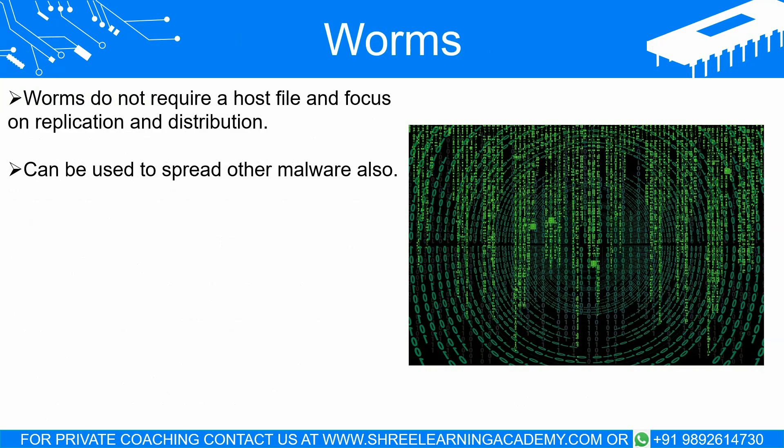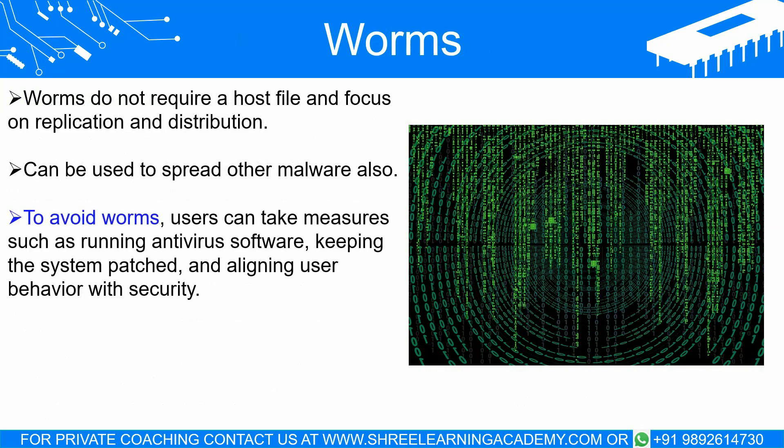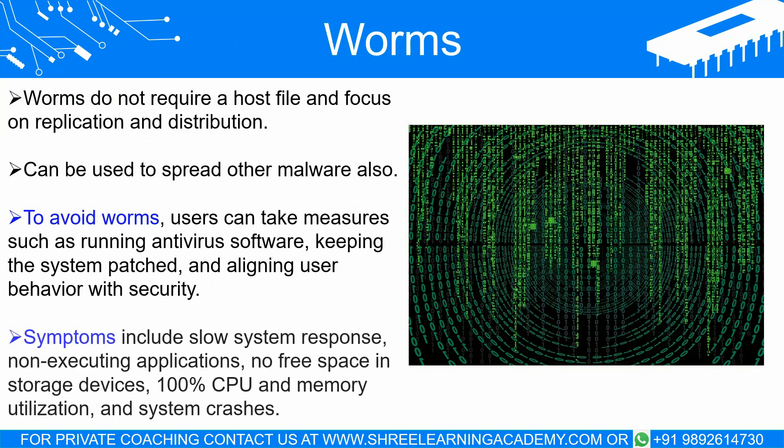Worms can also cause direct damage just like viruses. To avoid worms, you can take all the same measures that you take at the time of a virus, such as running anti-virus, keeping the system patched, and keeping user behavior aligned towards security. Symptoms of worm infection are a slow responsive system, applications that do not execute, no free space in storage devices, CPU and memory utilization at 100%, and system crashes.